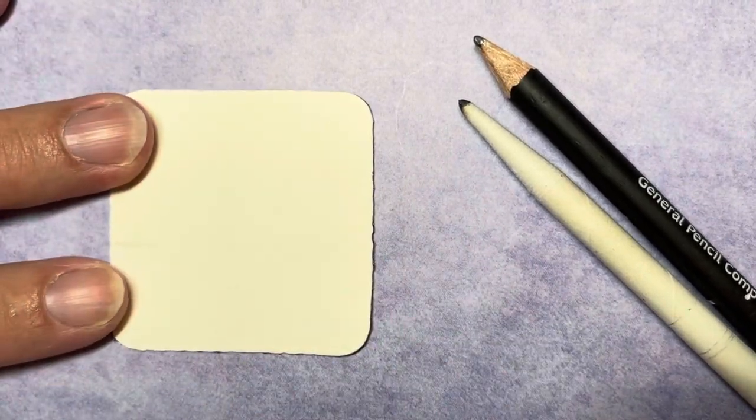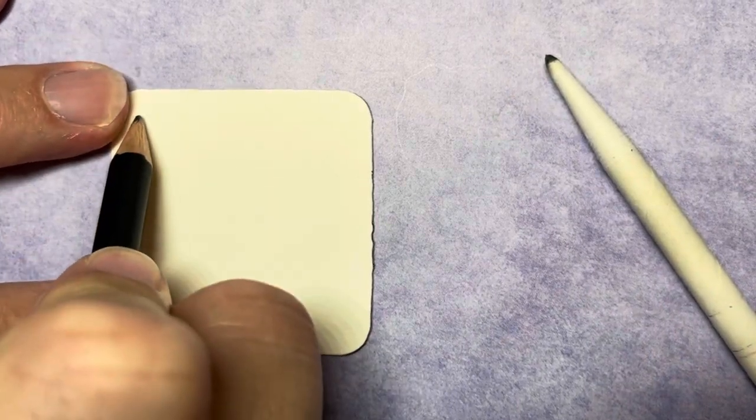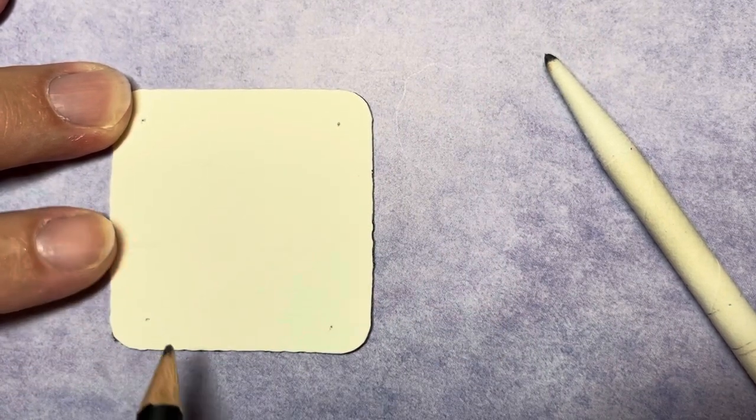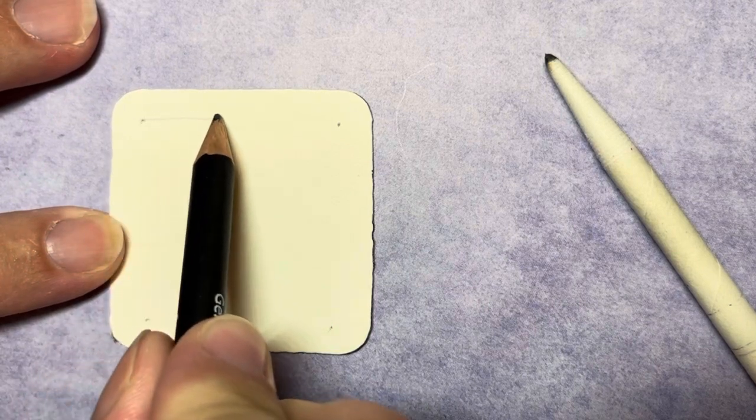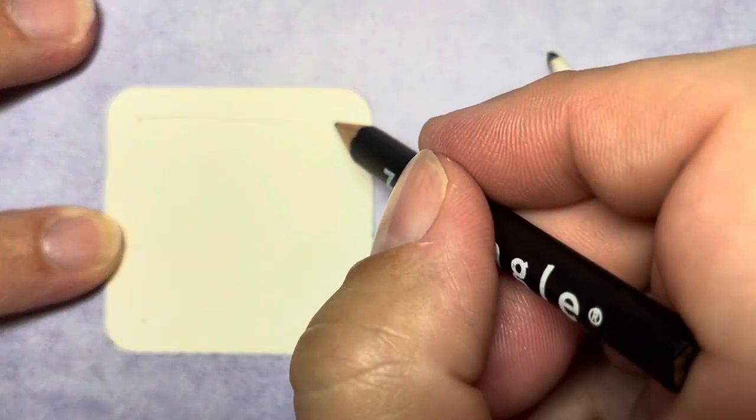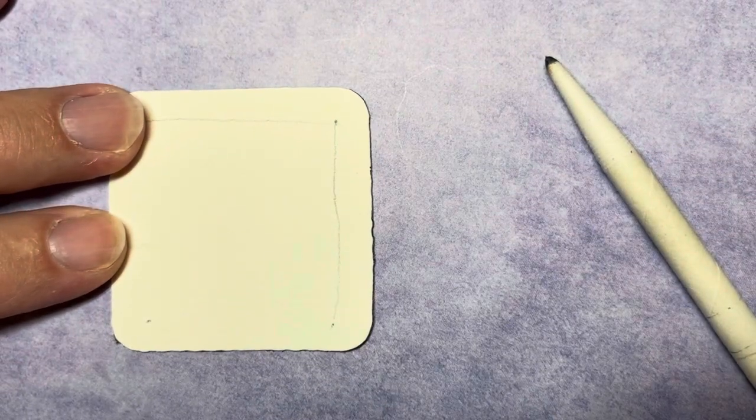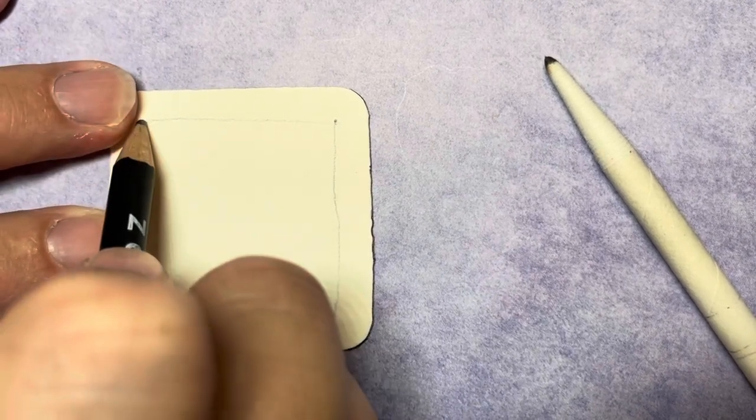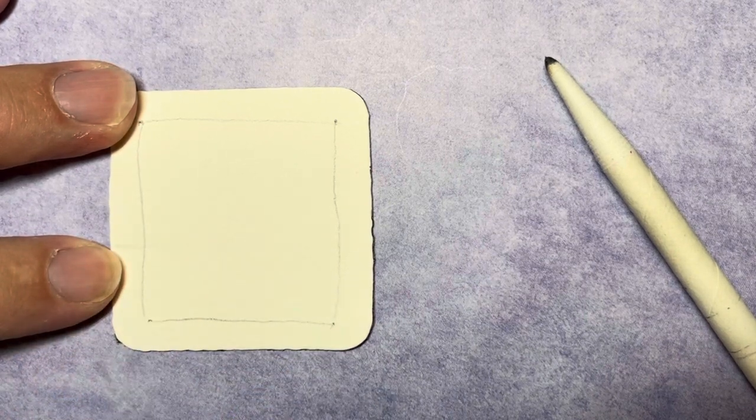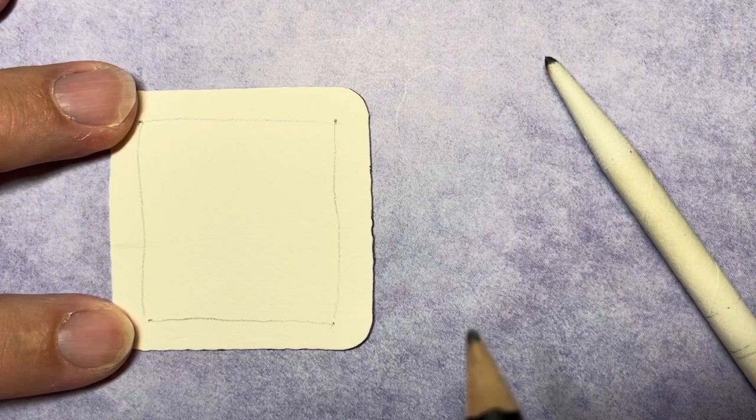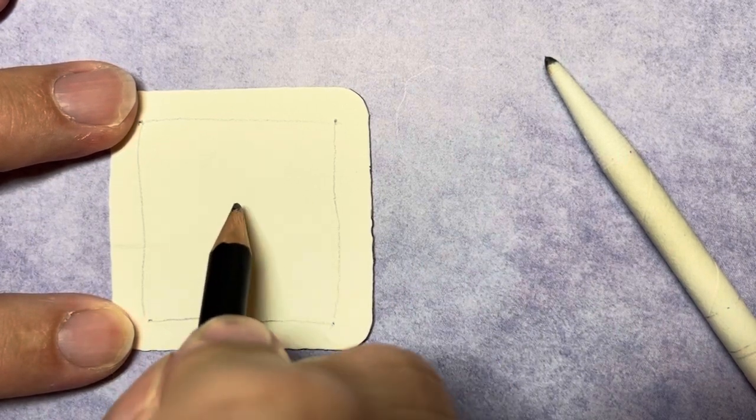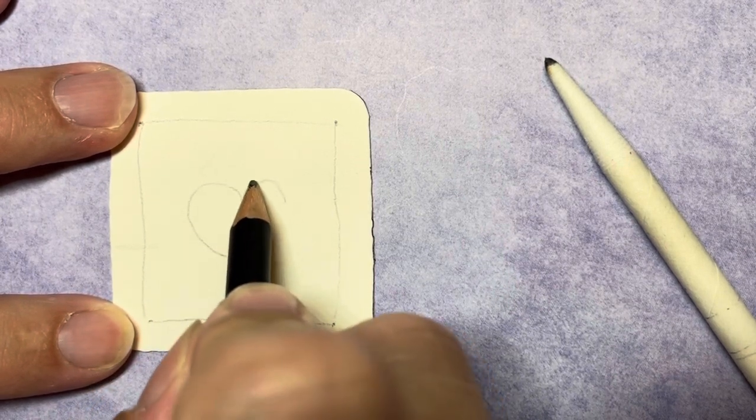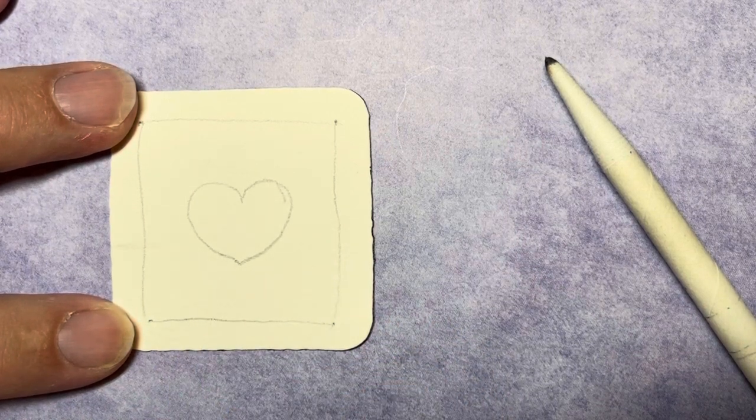All right to get started I'm going to pick up my pencil and I'm going to make four dots one in each corner and then I'm going to connect those dots. This is just a frame in our piece. I'm not concerned with making them straight. And then for this tangle today we're going to do something a little bit different. I'm going to actually draw a heart in the middle of my box.